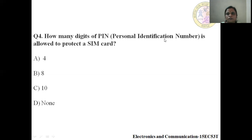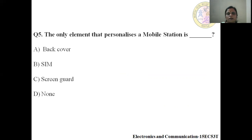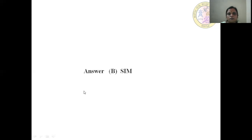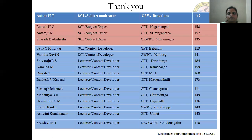The SIM contains a Personal Identification Number (PIN) that is four digits. The only element that personalizes a mobile station is — Option A: Back cover, Option B: SIM, Option C: Screen card, Option D: None. The answer is B — SIM. Thank you.